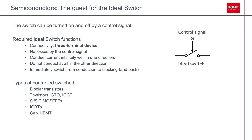We want to immediately switch from conduction to blocking and back. There are many types of semiconductor-controlled switches, such as bipolar transistors, thyristors, GTOs, IGCTs, silicon and silicon carbide MOSFETs, IGBTs, GaN HEMTs, and more.